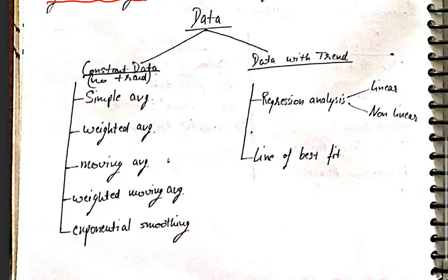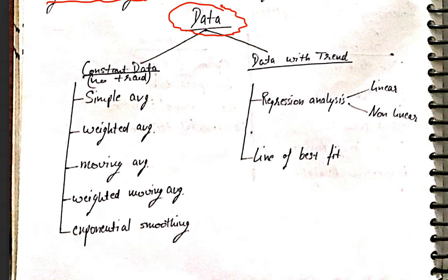The next key part is data. Everybody is talking about data these days — there are many jobs in this field: data engineer, data analyst, data scientist, business analytics. We are generating a lot of data now through sensors, devices, and online activities. Every second, everything is generating data, and by using that data you can predict how humans are going to behave. Here we will see very simple things just to give you a flavor.